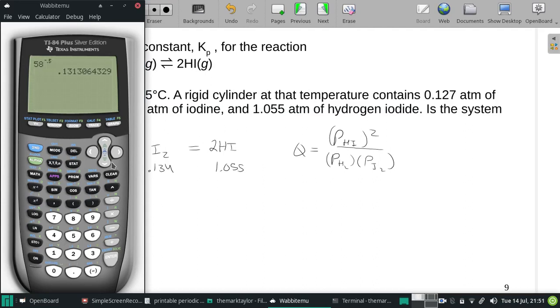The partial pressure of HI is 1.055, and we square it. Then we divide that by the hydrogen, 0.127, and also the iodine, 0.134. And we get a Q of 65.